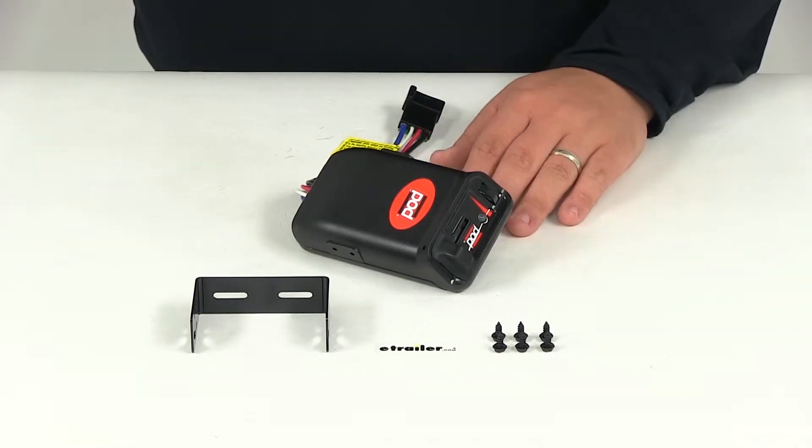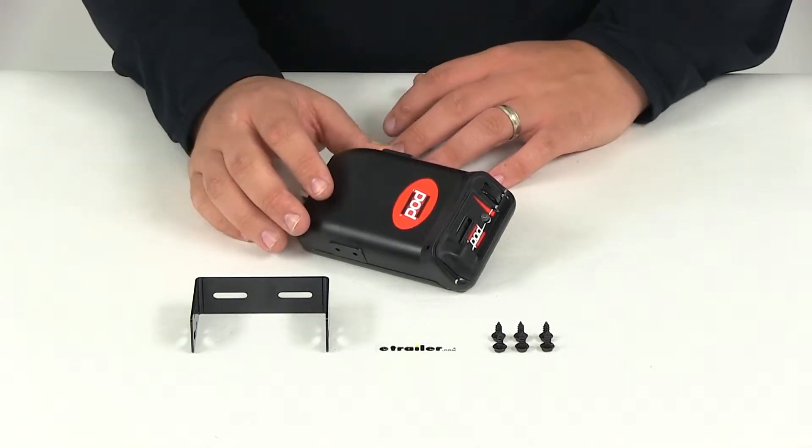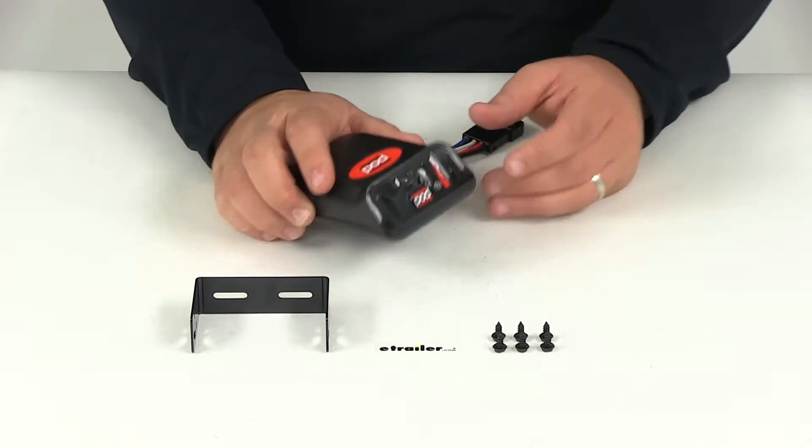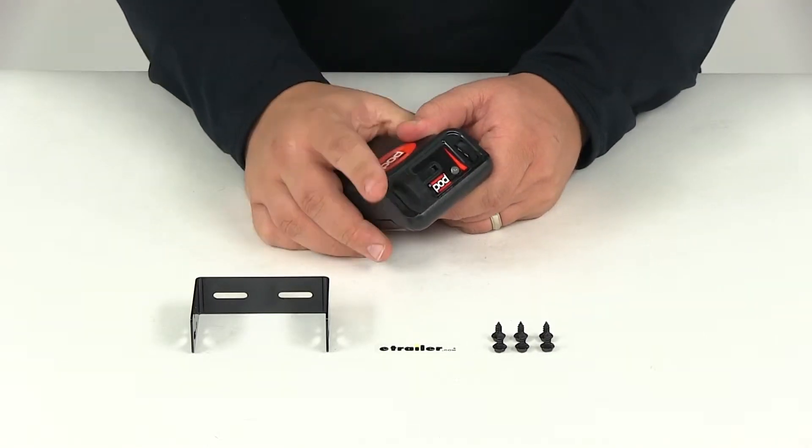This is a time-delayed brake controller. It's going to activate the electric trailer brakes. The signal is sent to the trailer brakes when the tow vehicle brakes are activated or when the manual override is activated.